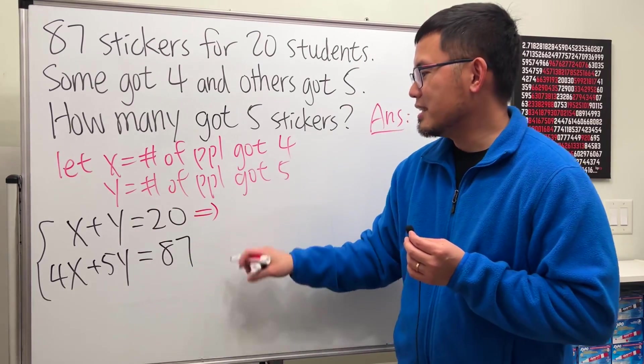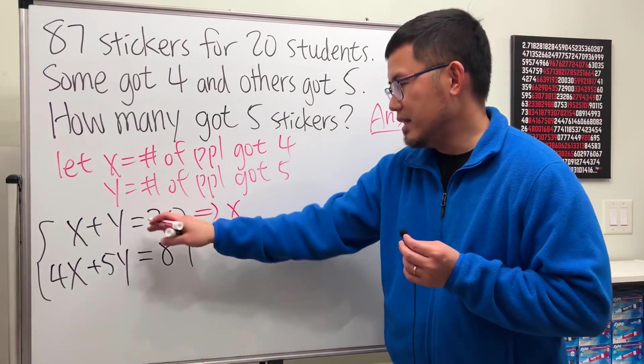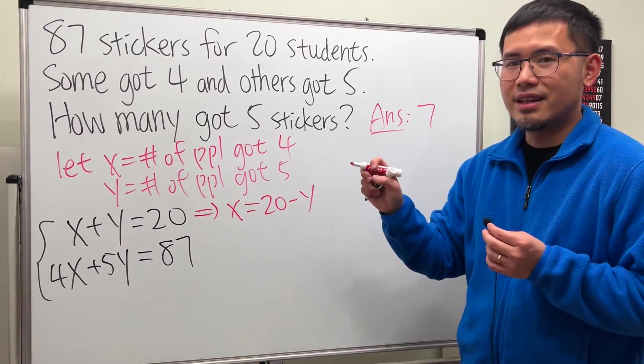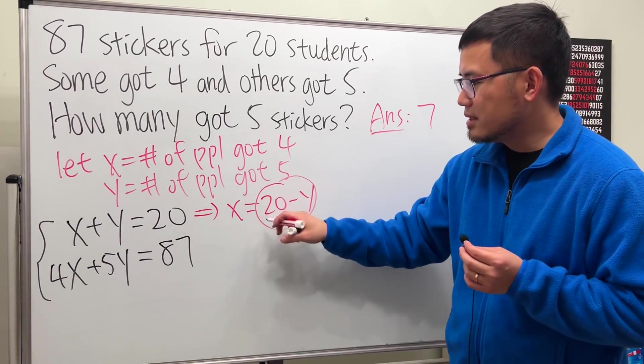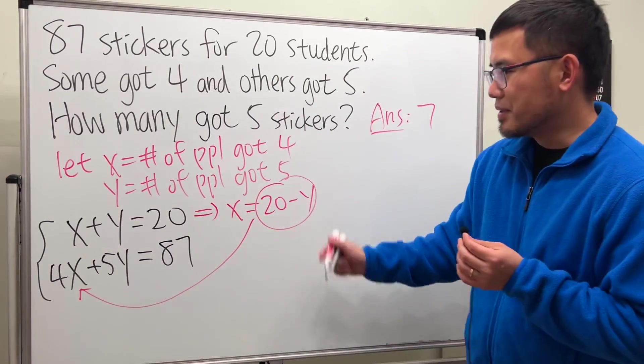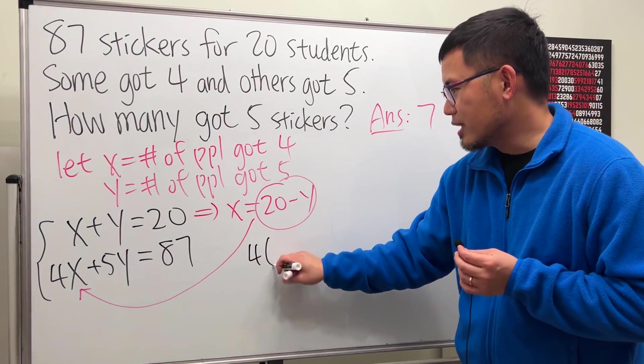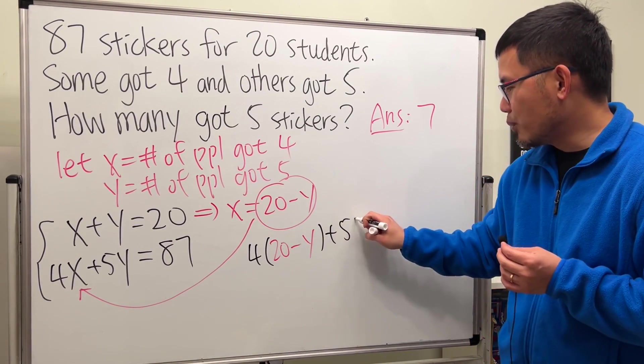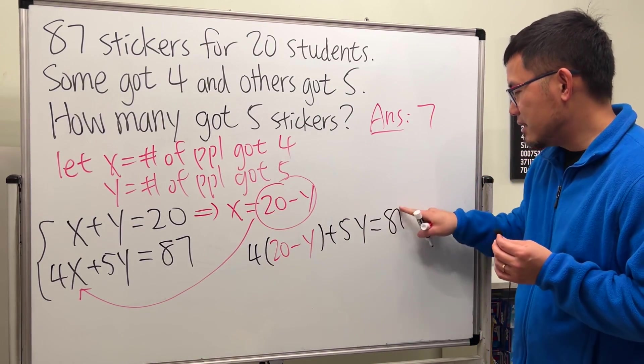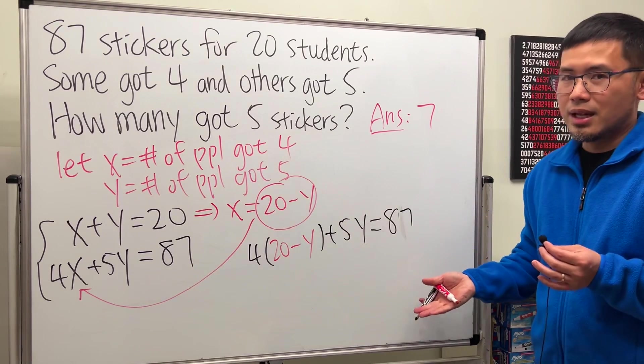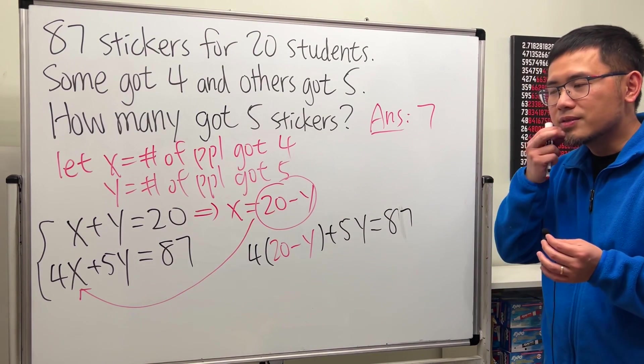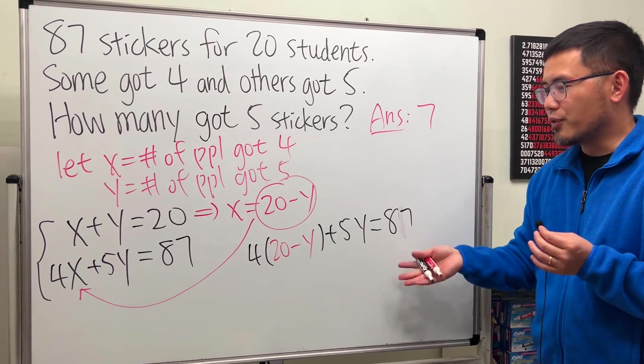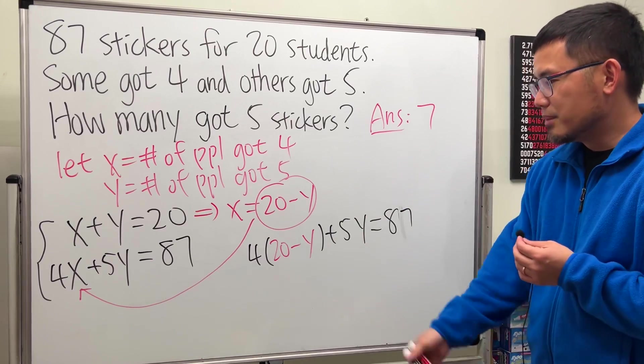And because we're trying to see how many people got five stickers, meaning we are trying to solve for Y. So from here, let's go ahead, minus Y on both sides, so we get X equals 20 minus Y. And then we can just enter this expression into this X here. Have a look. We will get four times (20 minus Y) plus 5Y equals 87. And this equation will allow us to solve for Y, and the Y is the answer.